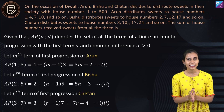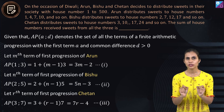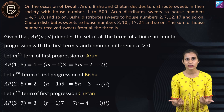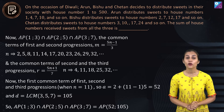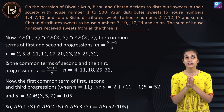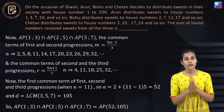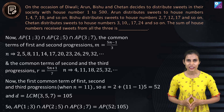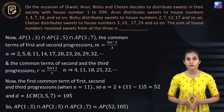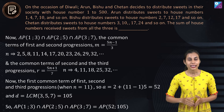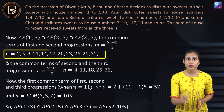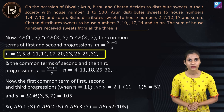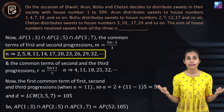We need the house numbers that appear commonly in all three APs. We start by equating the general terms of the first and second APs: 3m minus 2 equals 5n minus 3, which gives m equals (5n minus 1) divided by 3. The positive natural values of n for which m is a natural number are listed.